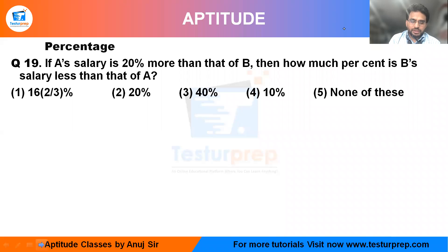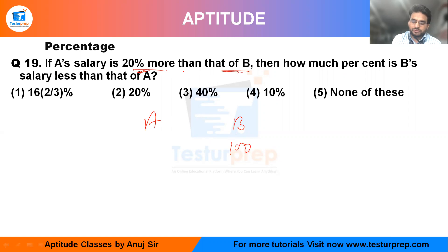Let me take question number 19. In this question they are saying if A's salary is increased by 20% more than that of B. Let me take A and B, and B's value is 100 — we have to deal with percentage, that's why. More than B means A's value will be 20 more than B, so A equals 120. The ratio of A to B simplifies — cancelling 120 to 100 — gives us 6 ratio 5.